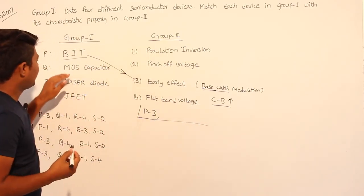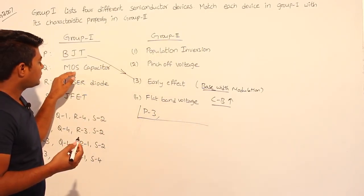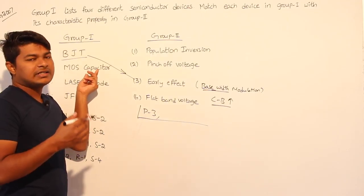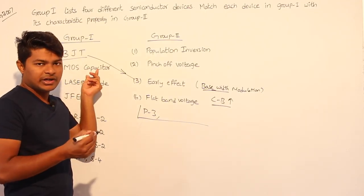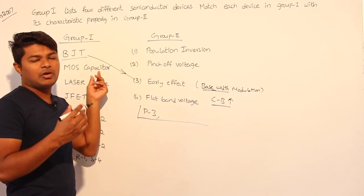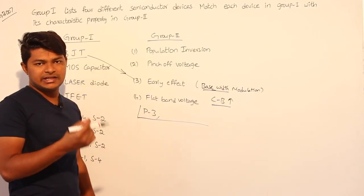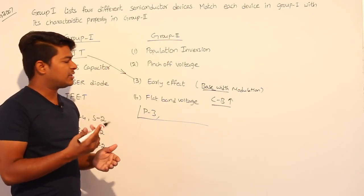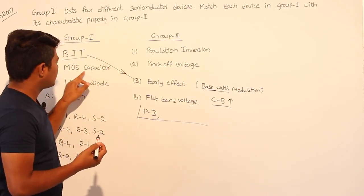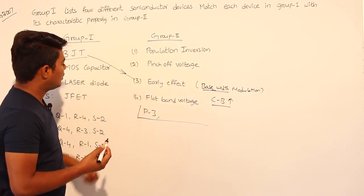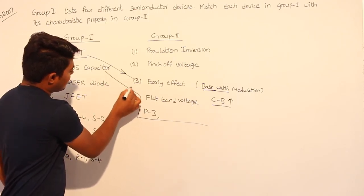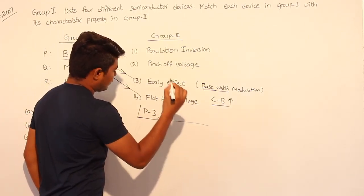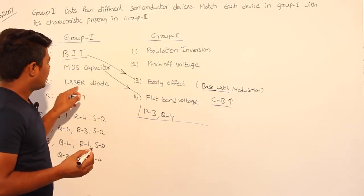Now coming to MOS capacitor: when the gate voltage is greater than the flat band voltage, then only the MOS capacitor is going to generate a channel, which means inversion is going to take place. So for this MOS capacitor, the characteristic is flat band voltage. Q is 4.